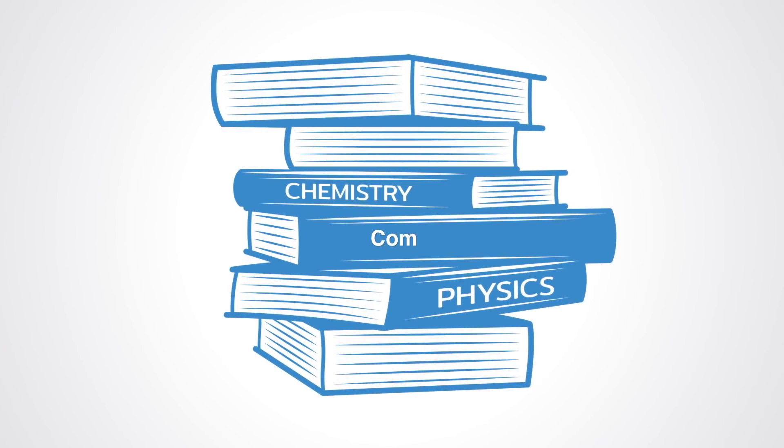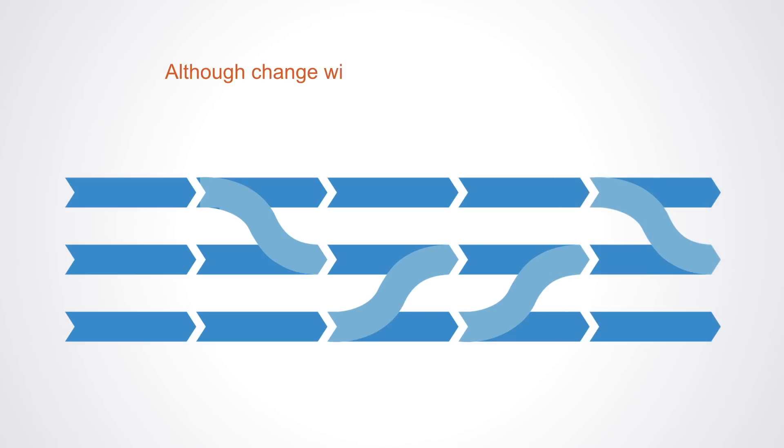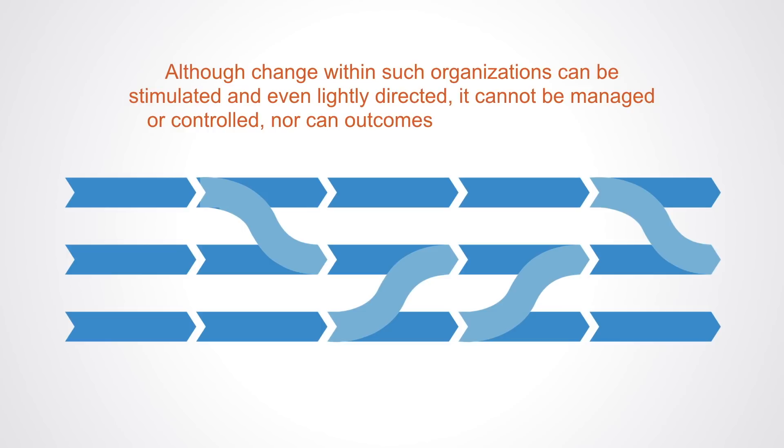A new cross-domain collection of knowledge dealing with the dynamics of change within complex systems is now emerging that challenges these assumptions and has the potential to create new approaches to management, design, and problem solving. Insights from a diversity of fields such as mathematics, physics, ecology, sociology, and organizational development have revealed that change within open complex systems takes place in counterintuitive ways. Although change within such organizations can be stimulated and even lightly directed, it cannot be managed or controlled, nor can outcomes be precisely predicted.